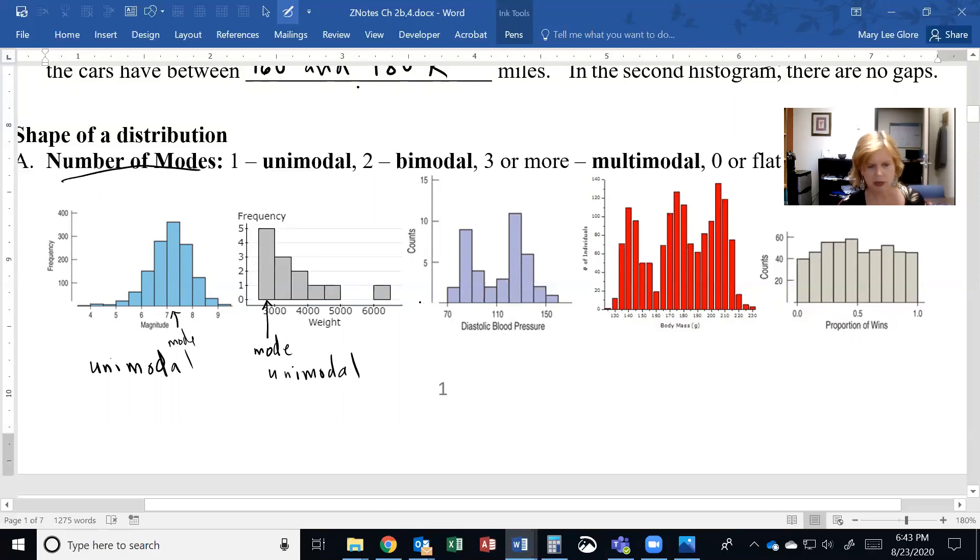Now if I look here, if I'm kind of tracing, I go up and down and up and down. So this has two modes. We got a mode here and a mode here. So this is called a bimodal distribution, which means it has two modes.